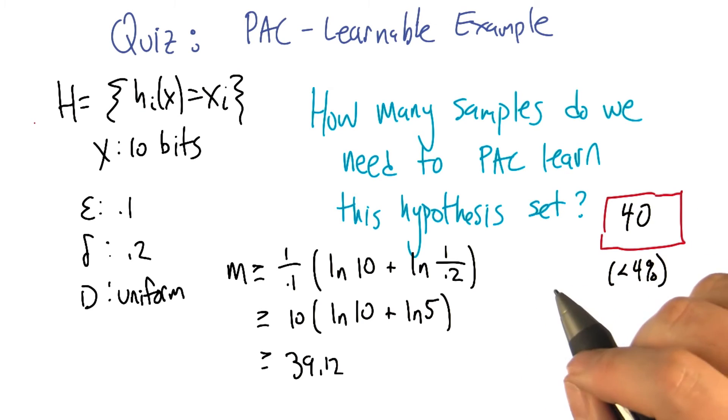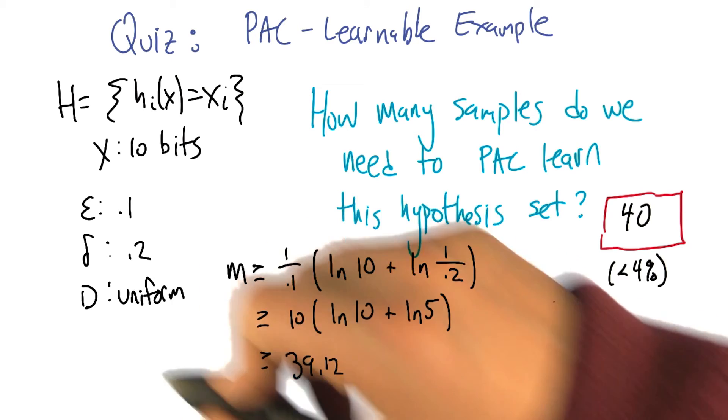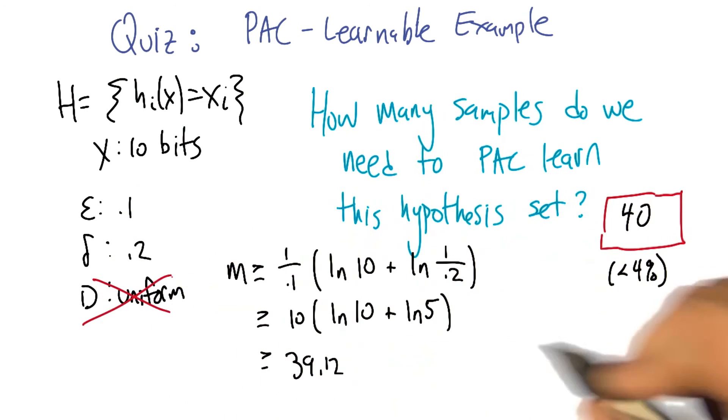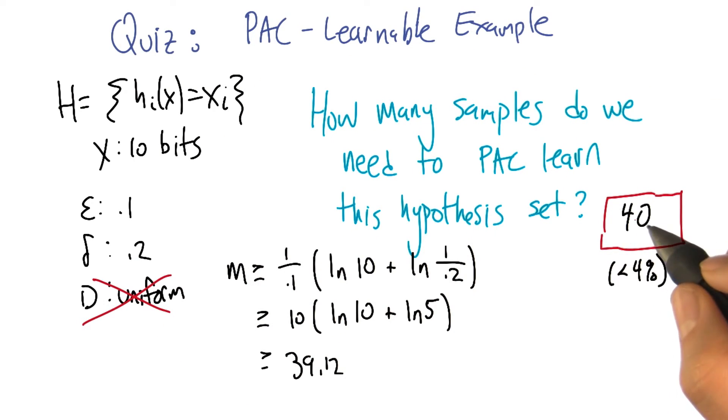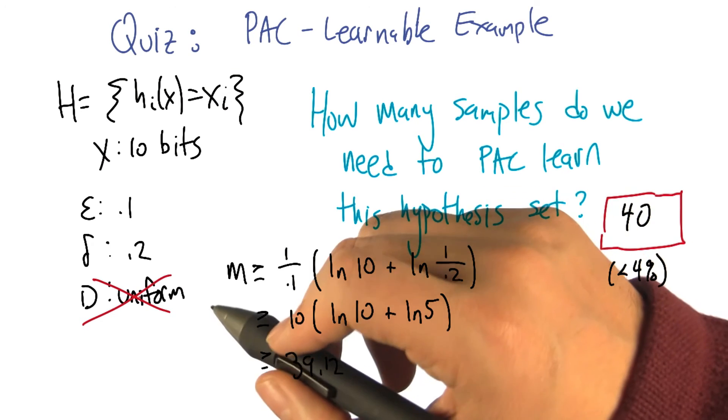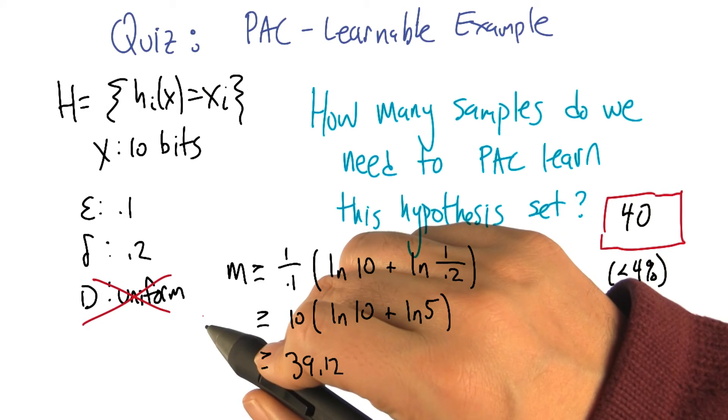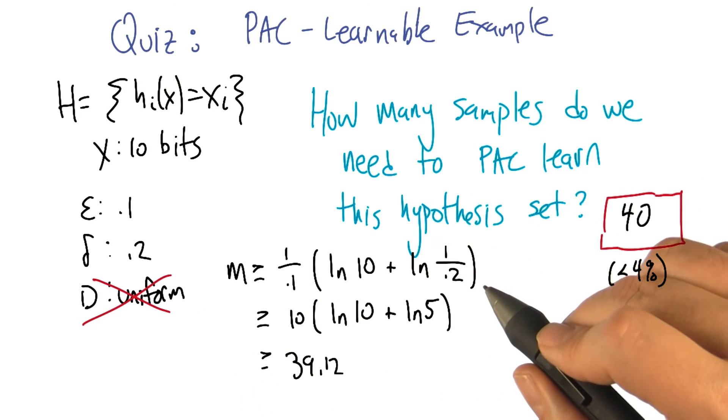Before we leave this quiz, let me point out one more thing. This bound is actually agnostic to the distribution from which samples came. This idea that it's from a uniform distribution is actually not being directly used here. So this is pretty cool. It actually doesn't matter. We only need 40 samples no matter what the distribution is. It's not like some distributions are harder or easier because we are measuring the true error on the same distribution that we used to create the training set.